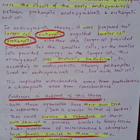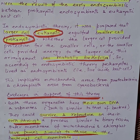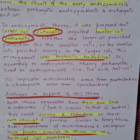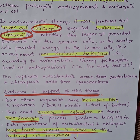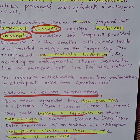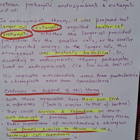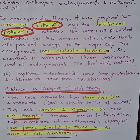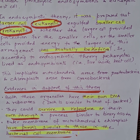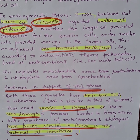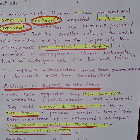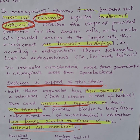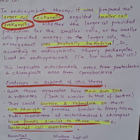In endosymbiotic theory, it was proposed that a larger cell — the eukaryote — and a smaller cell — the prokaryote — entered a mutually beneficial arrangement, where the larger cell provided protection for the smaller cell and the smaller cell provided energy to the larger cell. According to the theory, prokaryotes lived as endosymbionts inside the host cell.